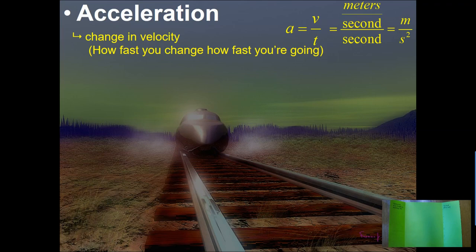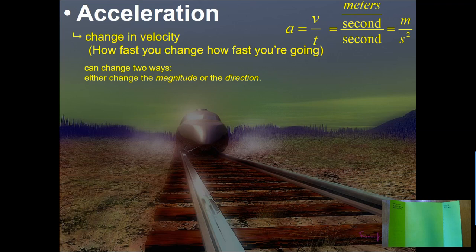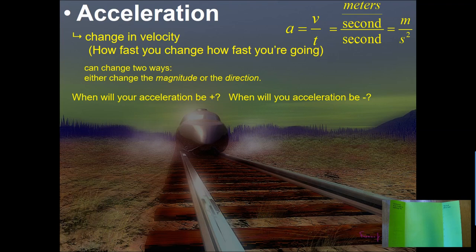This squared doesn't affect anything in the equation or calculations — it's part of the unit. Meters per second squared is the unit for acceleration. You can change acceleration two ways: you can change the magnitude of how fast you're going, or you can change the direction you're moving. At an amusement park, you feel acceleration in the pit of your stomach — either in a straight line on a roller coaster heading down, or on the spinny rides that change direction.